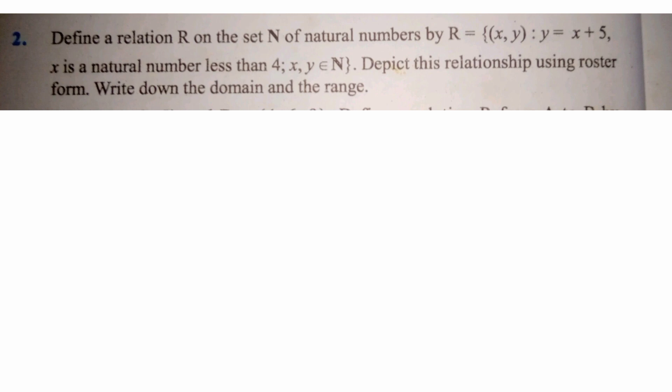Second question: Define a relation R on the set N of natural numbers by R equals the set of ordered pairs (x, y) such that y equals x plus 5, where x is a natural number less than 4 and x, y are elements of N. Depict this relationship using roster form and write down the domain and range. Here R is given, the relation between x and y is y equals x plus 5, and x takes the values 1, 2, and 3.